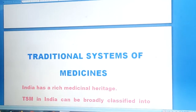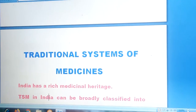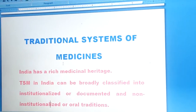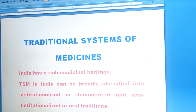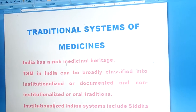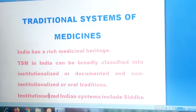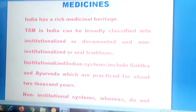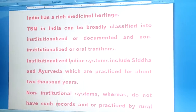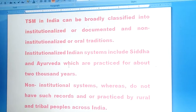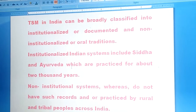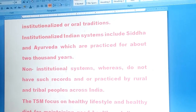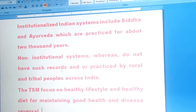In this class we can see about traditional systems of medicines. India has a rich medicinal heritage. Traditional systems of medicines can be broadly classified into institutionalized or documented, and non-institutionalized or oral traditions. Non-institutional systems are practiced by rural and tribal peoples across India. The traditional system of medicine focuses on healthy lifestyle and healthy diet for maintaining good health and disease reversal.